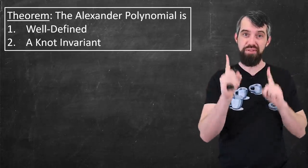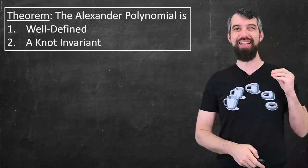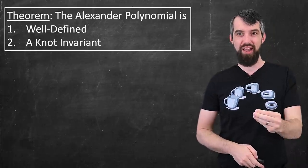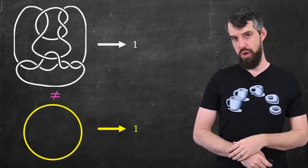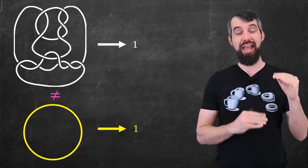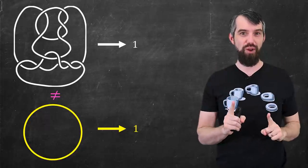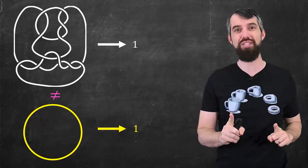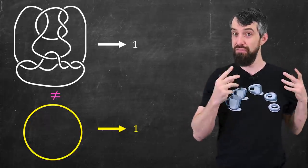If they have different polynomials, they're different knots. But it's still not perfect. Consider, for example, these two knots. The top is called the Conway knot, the bottom is the unknot. And they both have Alexander polynomial, perhaps surprisingly in the first case, of one. But they're not the same.